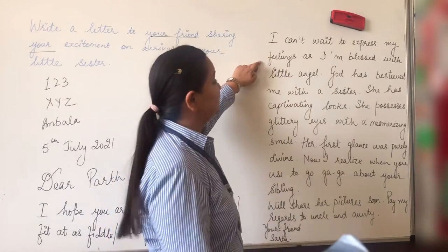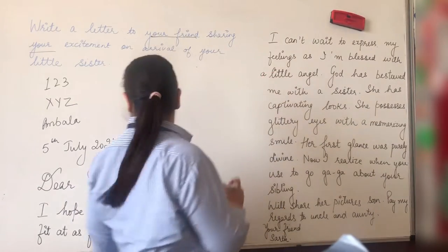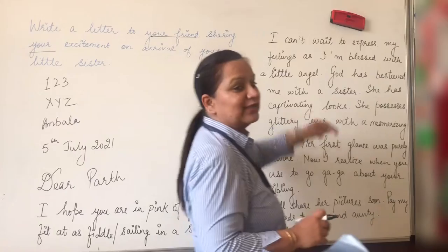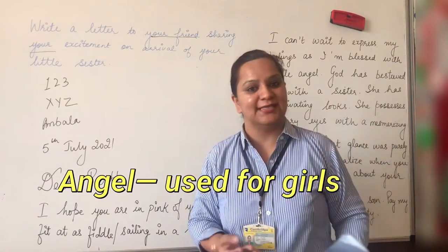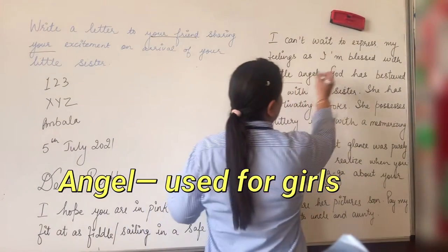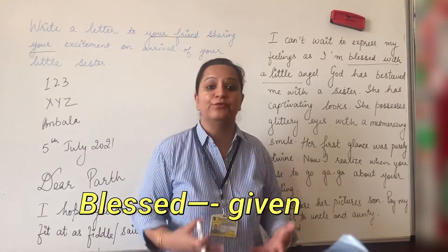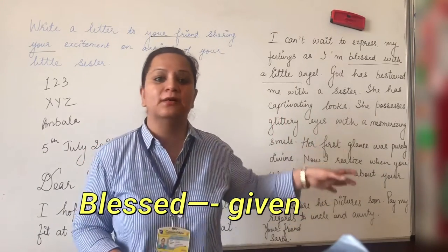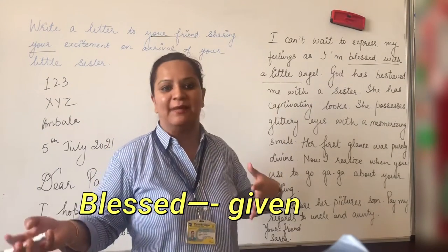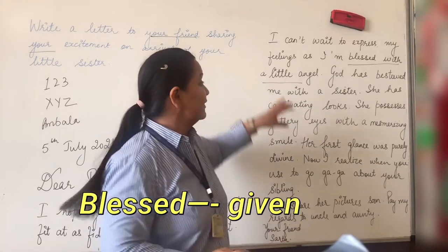Then: 'I can't wait to express my feelings as I am blessed with a little angel.' So this boy is telling his friend he is blessed with a little angel, giving a hint that he is going to write about his excitement about the little one who has come to his family. The expression 'blessed with' is very effective. Whenever you have to share feelings related to a girl you can write 'angel.' When you feel happy you can say 'blessed' — for example, 'I am blessed to have such a sister-in-law.' So it is just an expression of sharing.